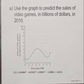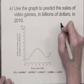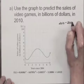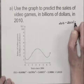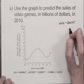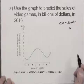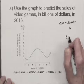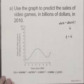Use the graph to predict the sales of video games in billions of dollars in 2010. Well, in 2010, we'll find what t is by subtracting 2004. The t is the number of years after 2004. So 2010 is six years after 2004, so this tells us that t is equal to six.